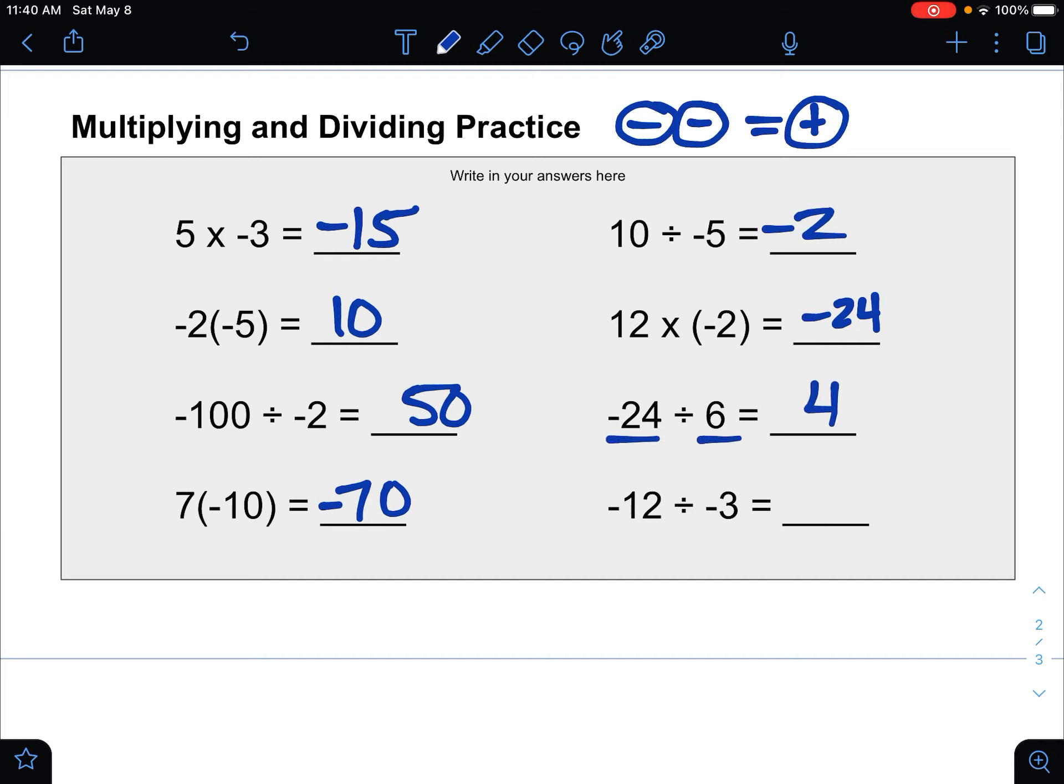And then 24 divided by 6 would be 4, one negative again makes it negative, and then 12 divided by 3 would be 4, with two negatives makes it a positive 4.